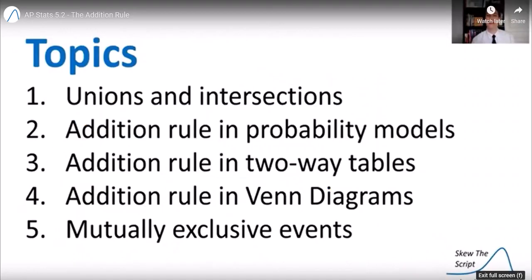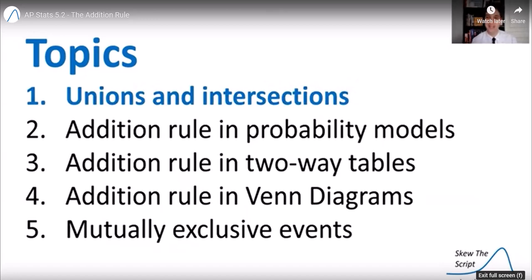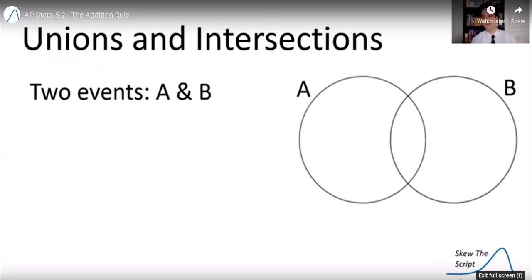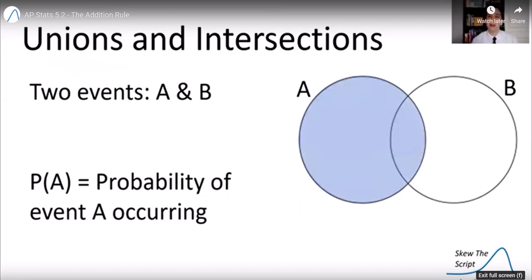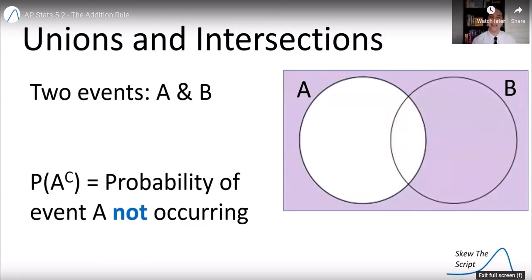Before we get into the topic at hand, let's talk about some probability notation rules around unions and intersections. Say we have a Venn diagram of two events, A and B. P(A) means the probability that event A occurs. P(B) means the probability that event B occurs. P(A^C) is the probability of event A's complement, meaning the probability that event A does not occur.